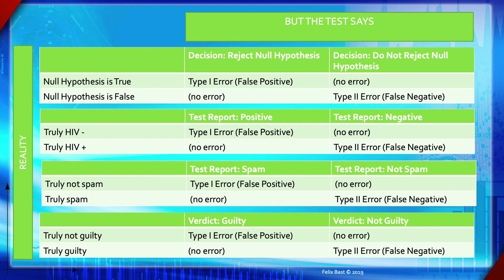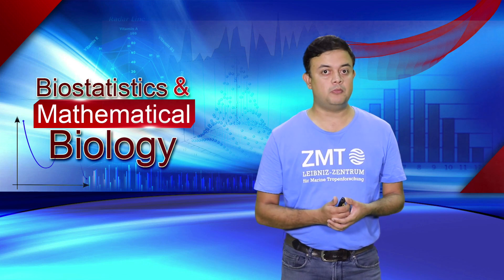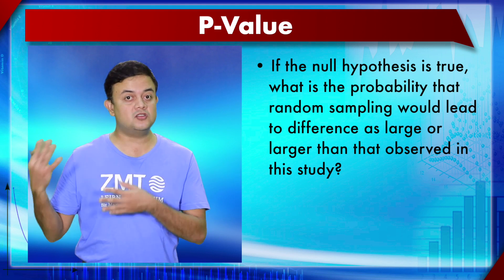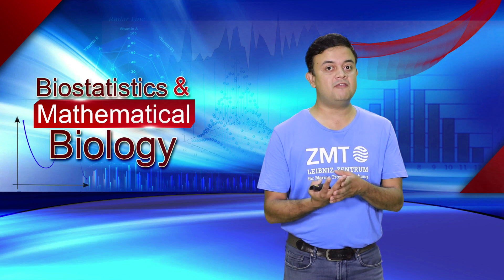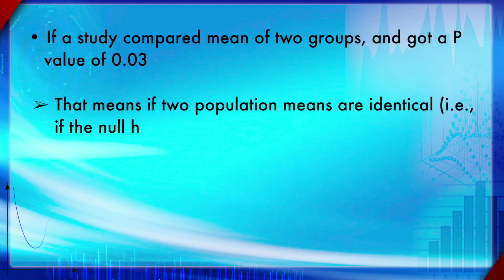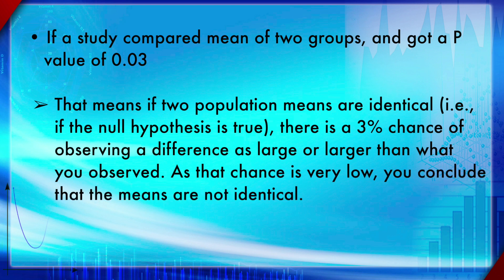By the way, what is a p-value? It is: if the null hypothesis is true, what is the probability that random sampling would have led to a difference as large or larger than what is observed in your study? The p-value answers this question, and the definition always starts with the proposition 'if the null hypothesis is true.' For example, if a study compared two groups and got a p-value of 0.03, that means if the two populations had exactly the same mean — the null hypothesis is true — the chance of observing that much difference is being evaluated.